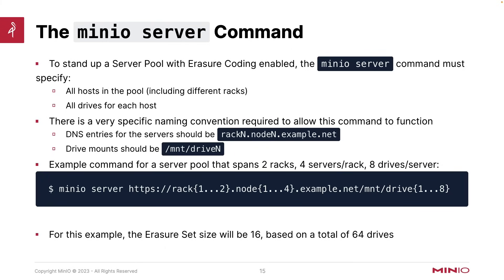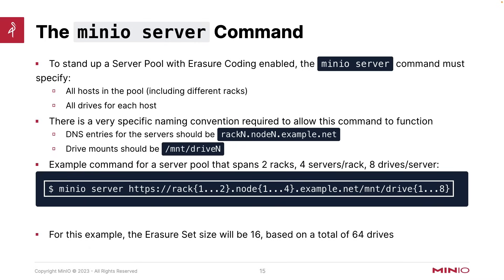When starting up your server pool with Erasure Coding enabled, the MinIO server command must specify all hosts in the pool and all drives for each host. Following a naming convention, DNS entries for each server should include the rack number, node number, and fully qualified domain name, while drive mounts should be /mnt/drive1 through drive7 or similar. This allows a single concise command — for example: minio server https://rack{1...2}-node{1...4}.example.net/mnt/drive{1...8} — giving an Erasure Set size of 16 across 64 drives total. Multiple separate entries would create separate clusters rather than one unified pool.